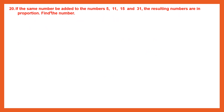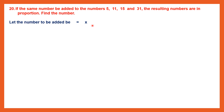Question 20. If the same number be added to the numbers 5, 11, 15 and 31, the resulting numbers are in proportion. Find the number. That means if we take any number and add that same number to all four numbers, the new numbers we get will be in proportion. Let the number to be added be x.